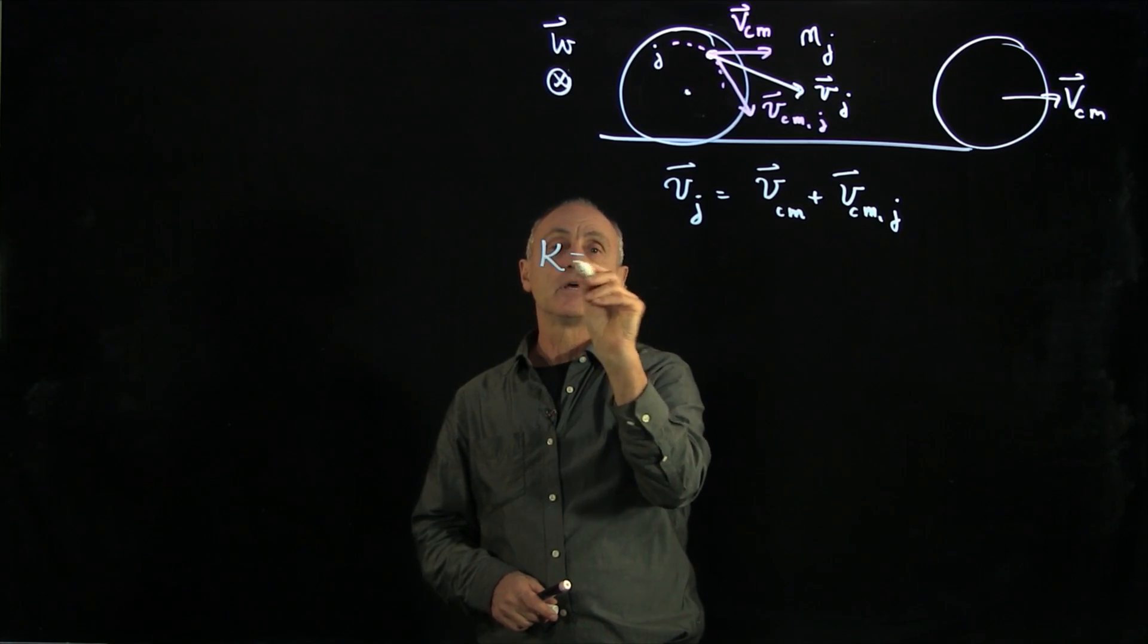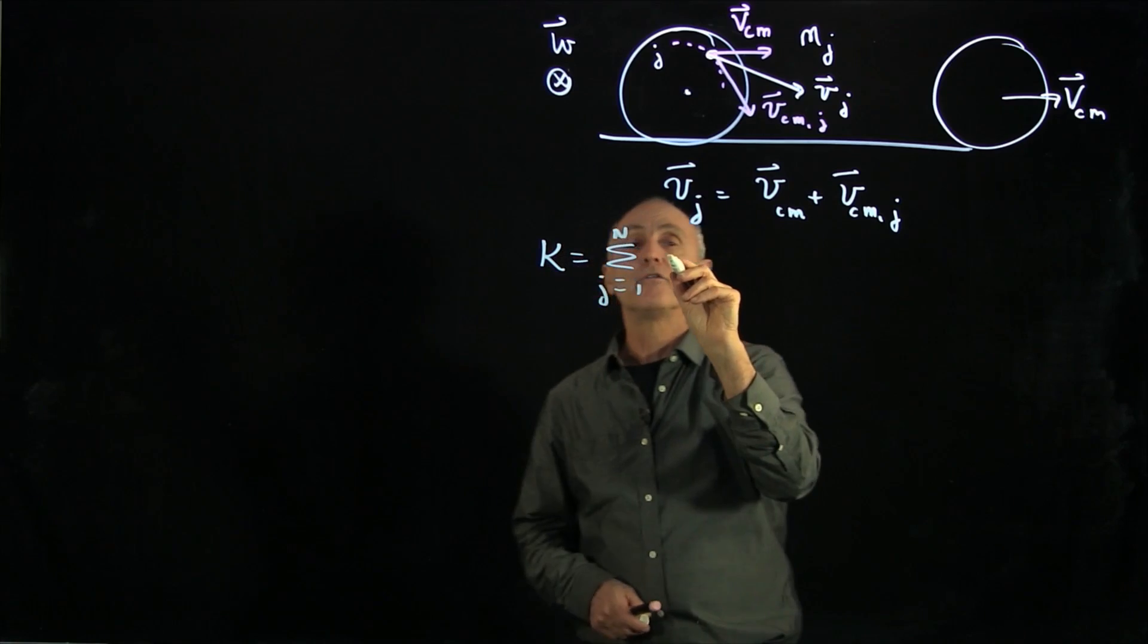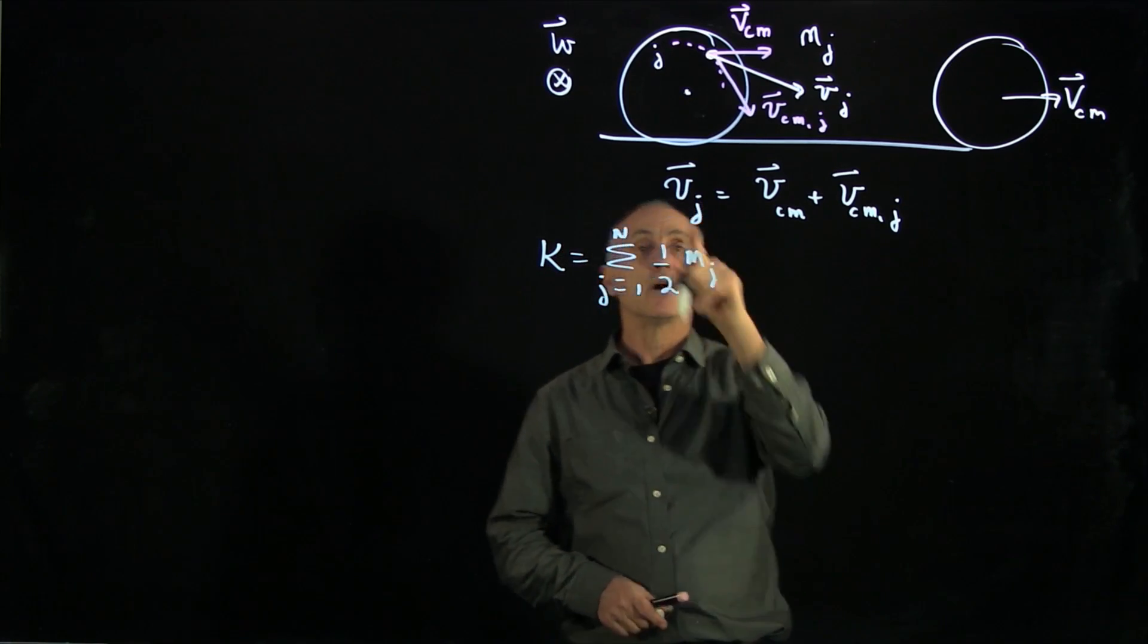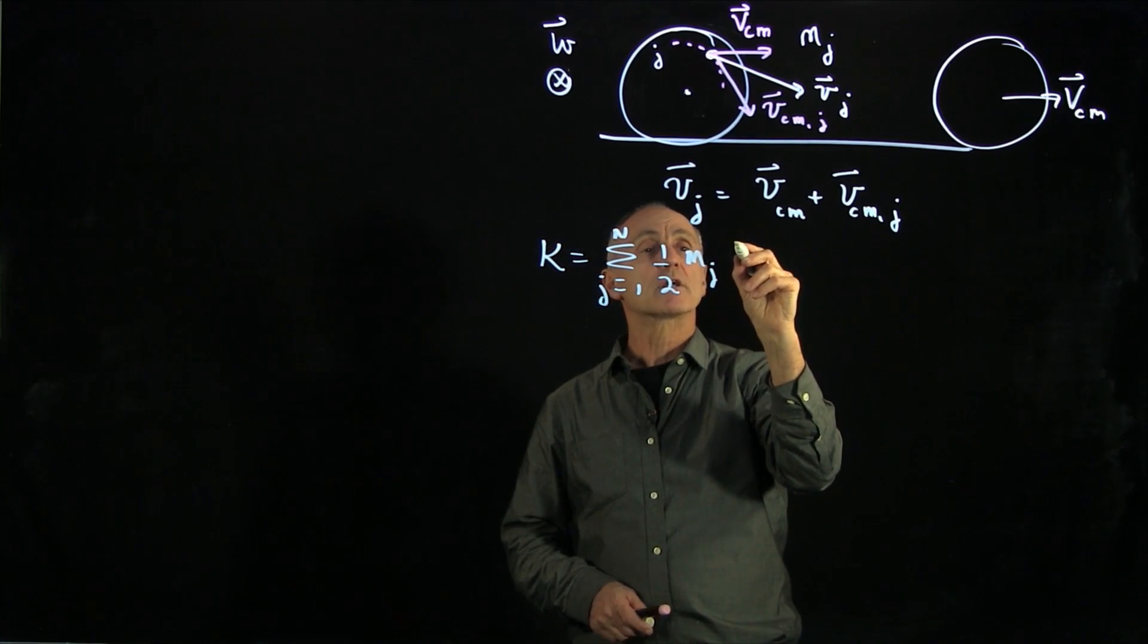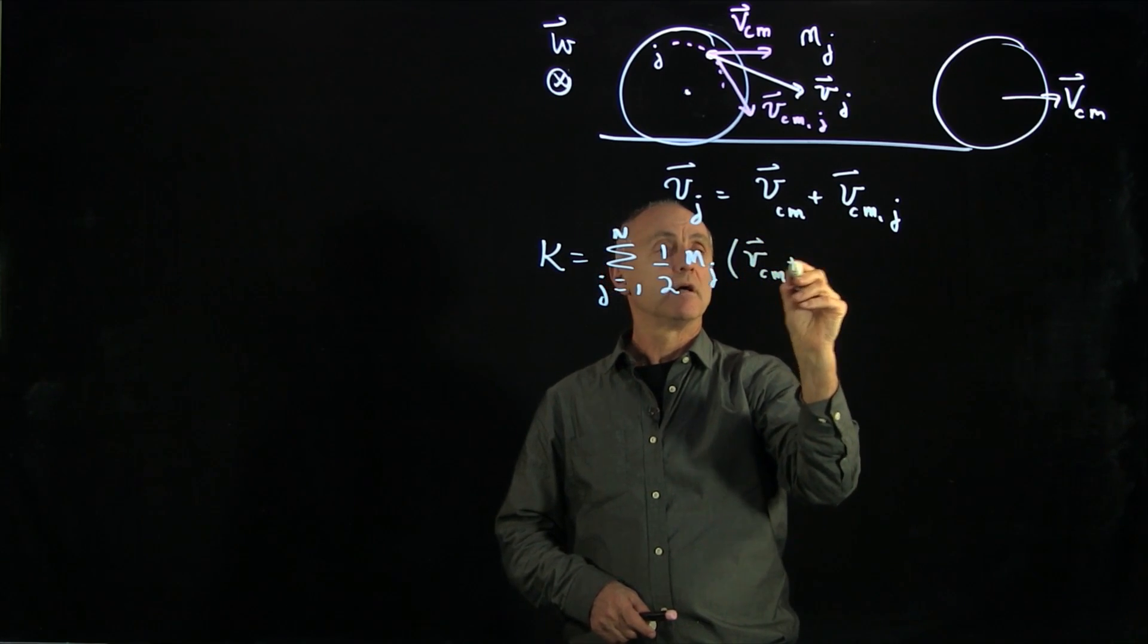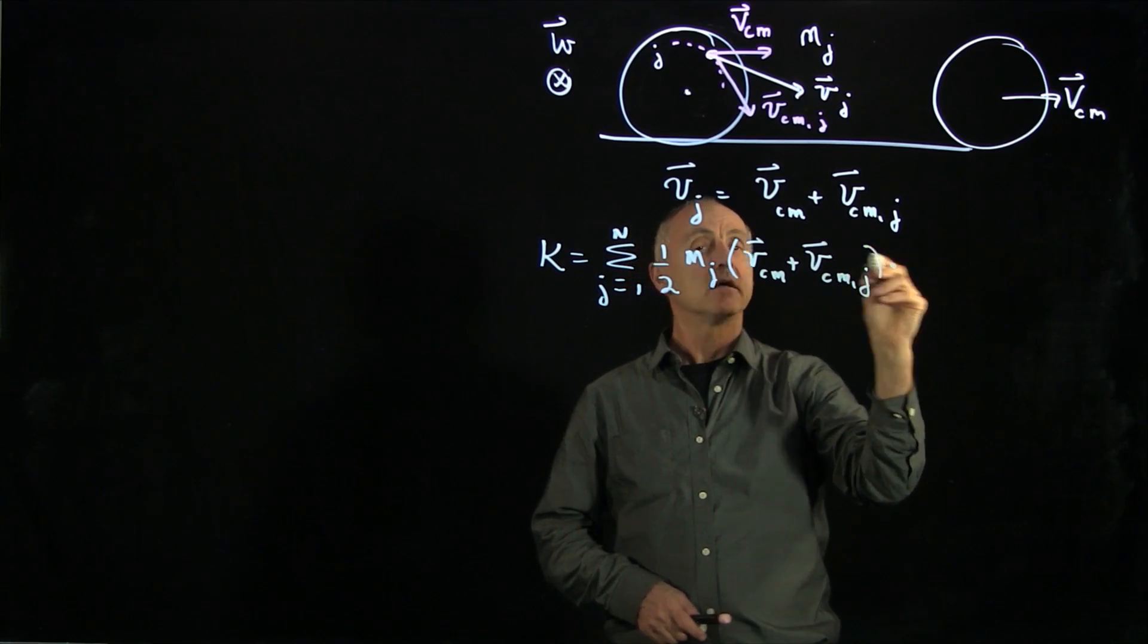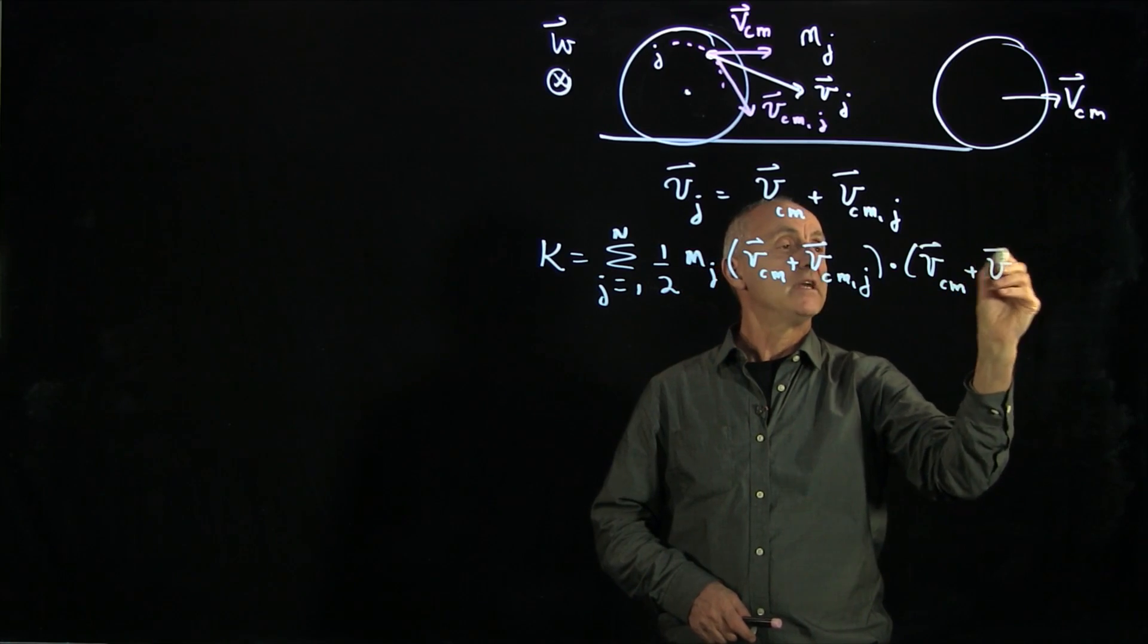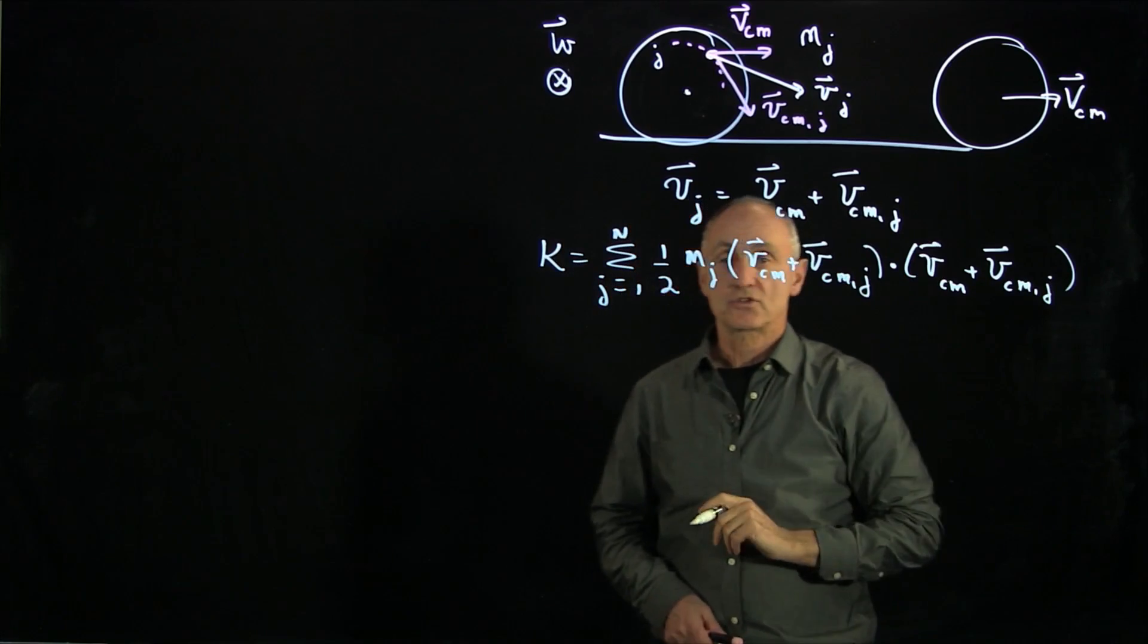Well, the kinetic energy is the sum j from 1 to n of 1/2 mj times the velocity of this j-th particle squared, which we can take as a dot product.